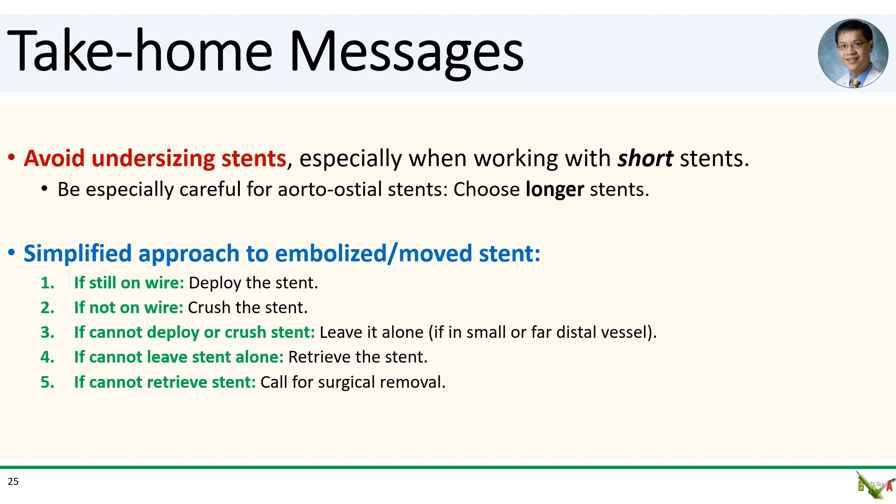Take-home messages: First, avoid undersizing stents — especially short stents, which have less length to grab the vessel wall. Be especially careful at the ostium, where some stent hangs in the aorta by design; be very leery of placing any stent less than 12 millimeters long at the ostium. Finally, for a simplified approach to an embolized stent: if it's still on the wire, deploy it; if it's not on the wire, crush it; if you can't deploy or crush it, see if you can leave it alone; if you can't leave it alone, try to retrieve it; and if that can't be done, call for surgical removal.